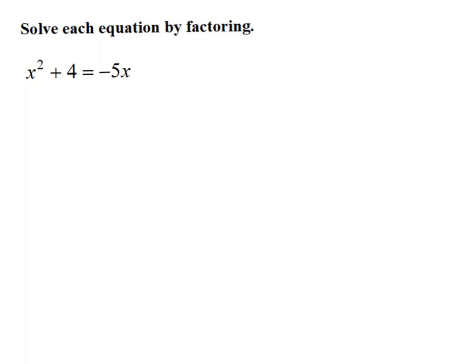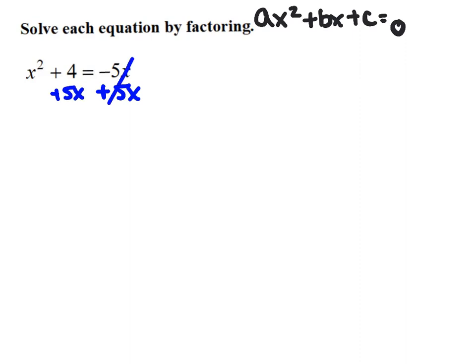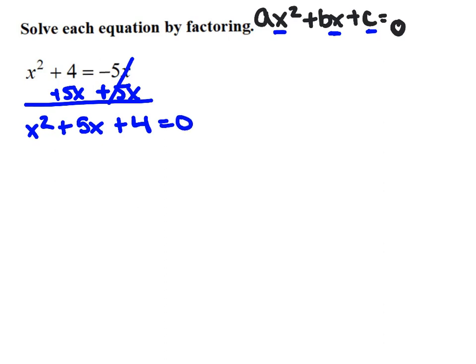For our next example, the equation is not in standard form again, because it should be ax squared plus bx plus c equals zero. To move the 5x to the same side, we add 5x to both sides, then rewrite the terms in order: x squared term first, then the x term which is 5x, then the constant value of 4. So we have x squared plus 5x plus 4 equals zero.